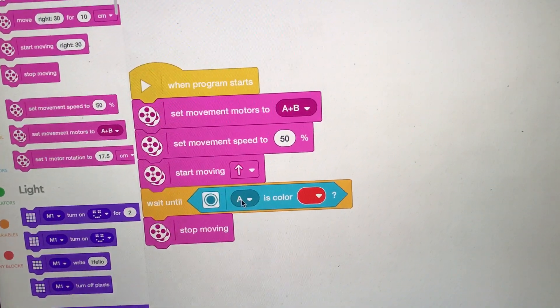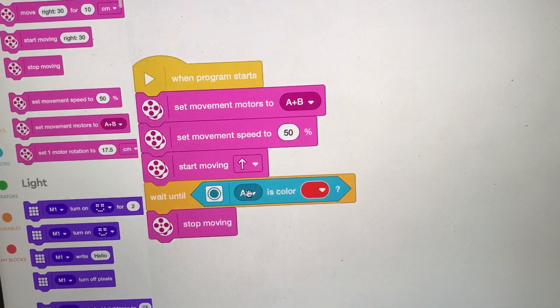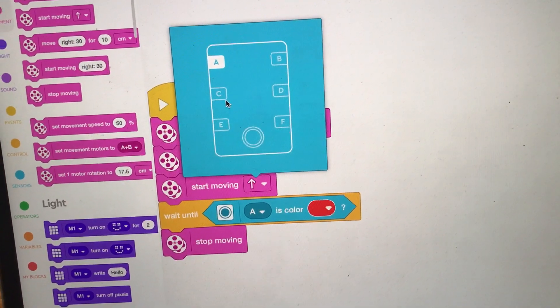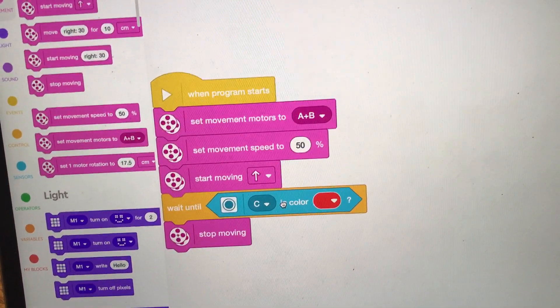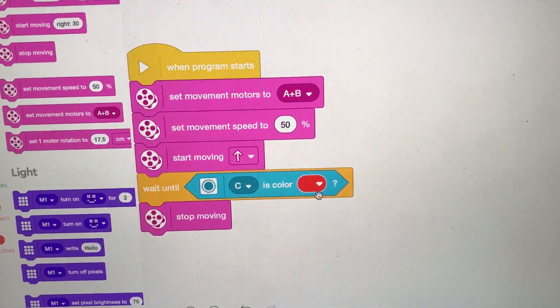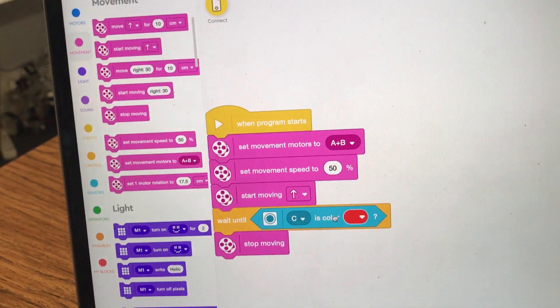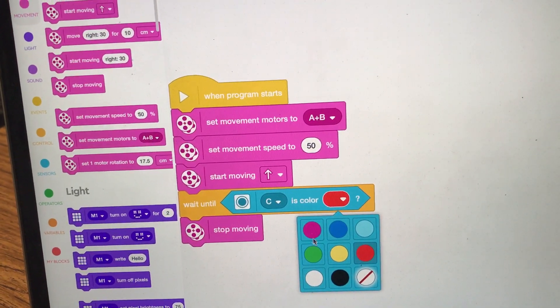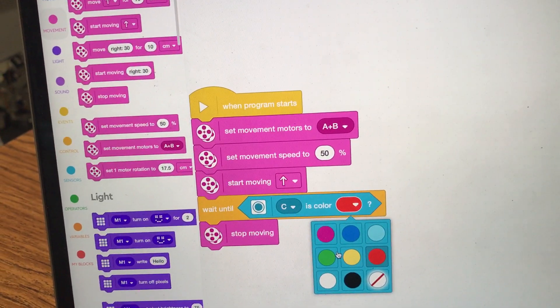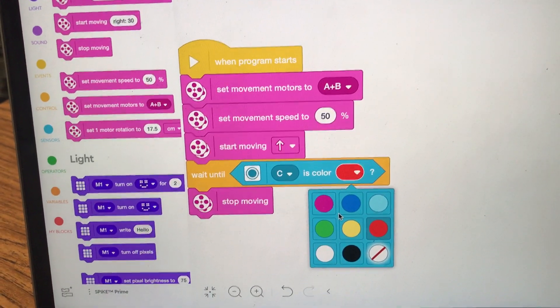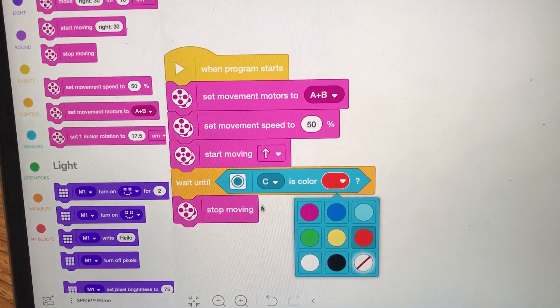Then I've got it set to start moving straight and then you want to wait until, well in this case I would need to change it to port C actually, or wherever you have that color sensor plugged in, and then whatever color you want it to read. So maybe you don't want to stop on red, maybe you want to stop on blue or maybe you want to stop on green or white or black or the absence of a color, or maybe you want to do something totally different.